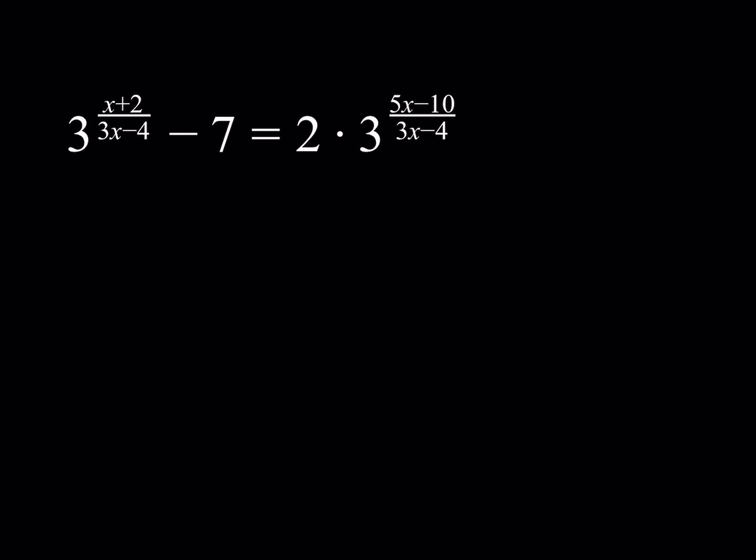Now, we do have an equation with 3 to the power x plus 2 divided by 3x minus 4 minus 7 equals 2 times 3 to the power 5x minus 10 divided by 3x minus 4. So this is an exponential equation. But one thing about this problem is that the exponents are different. If you had the same exponent, we could put it all together and just solve for it, and you know, log both sides, so on and so forth. I mean, you could try to log both sides, but you're going to run into some complications. But there's something that makes this problem really interesting, which I'll show you now in a little bit.